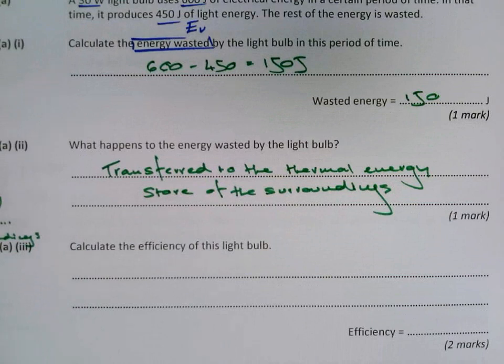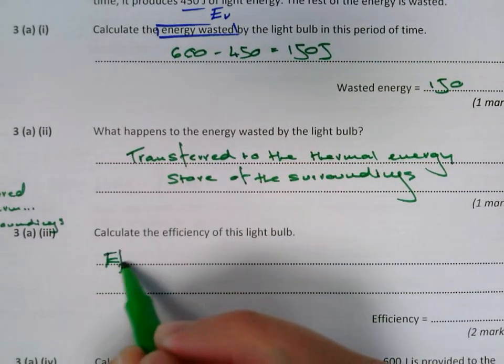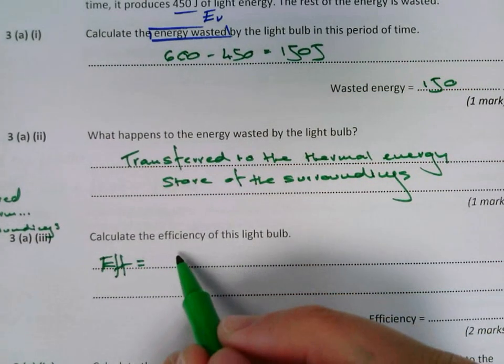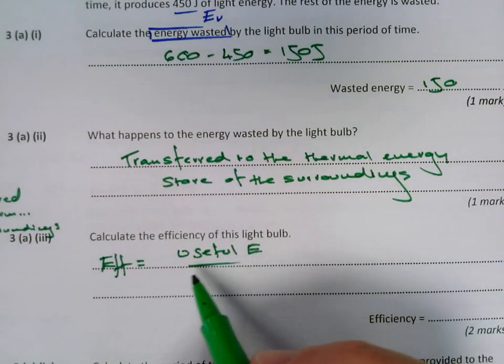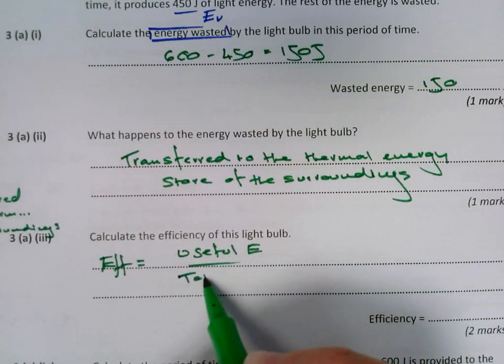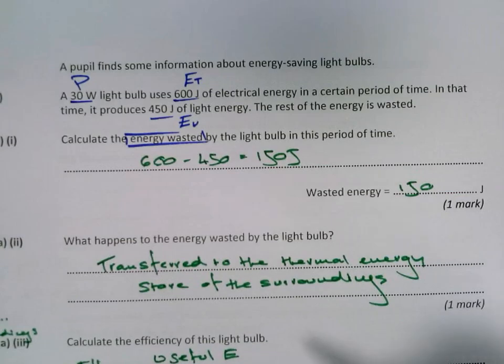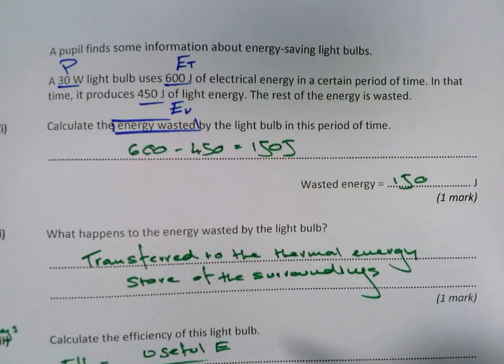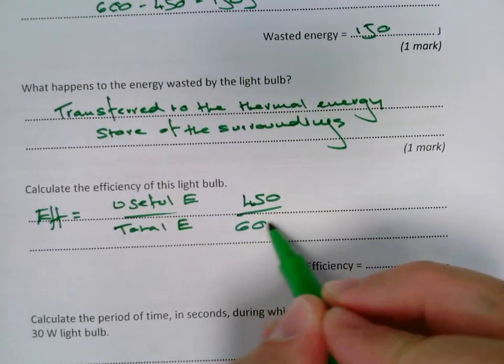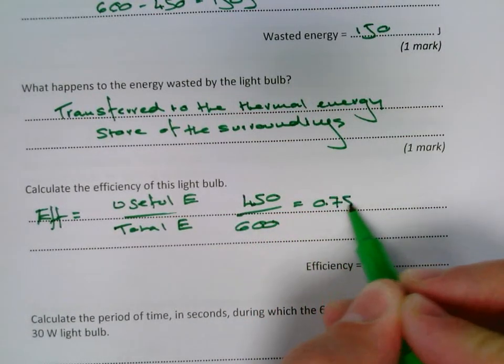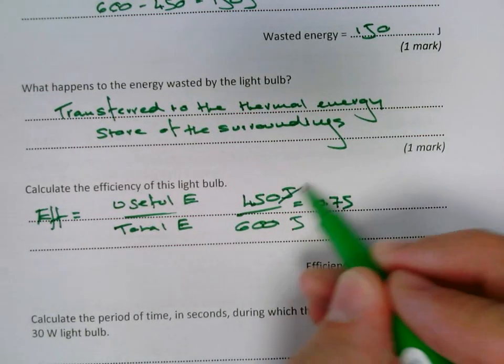It wants you to calculate the efficiency of this light bulb. The efficiency calculation is efficiency equals useful energy divided by total energy. We said at the top that our useful was 450 joules and that the total was 600 joules. So 450 divided by 600 is going to give you 0.75. Doesn't need any units because it's an efficiency - you're doing a joule divided by joule, gets rid of both.